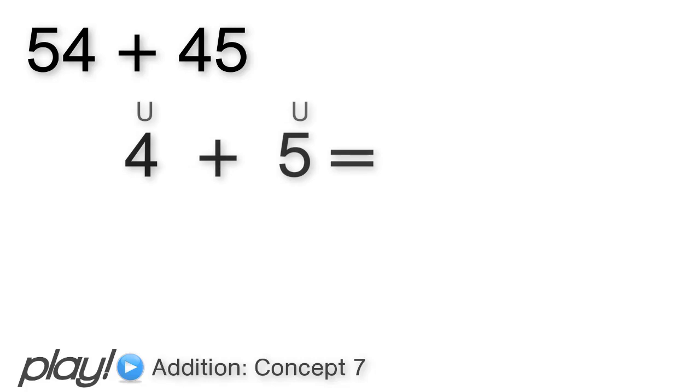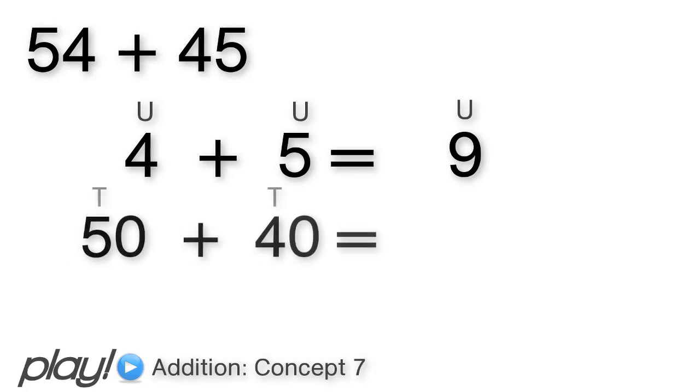Let's look at 54 plus 45. Using the long method, 4 units plus 5 units gives us 9 units. Then our tens, 50 plus 40 gives us 90 or 9 tens.